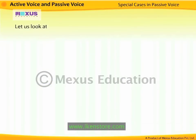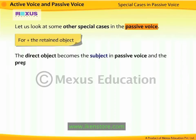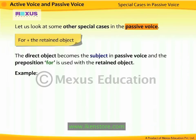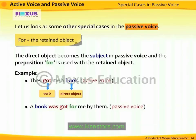In the special case of 'for + retained object,' the direct object becomes the subject in passive voice and the preposition 'for' is used with the retained object. For example, 'They got me a book' becomes 'A book was got for me by them.' The direct object 'book' becomes the subject and the preposition 'for' is used with the retained object 'me.'